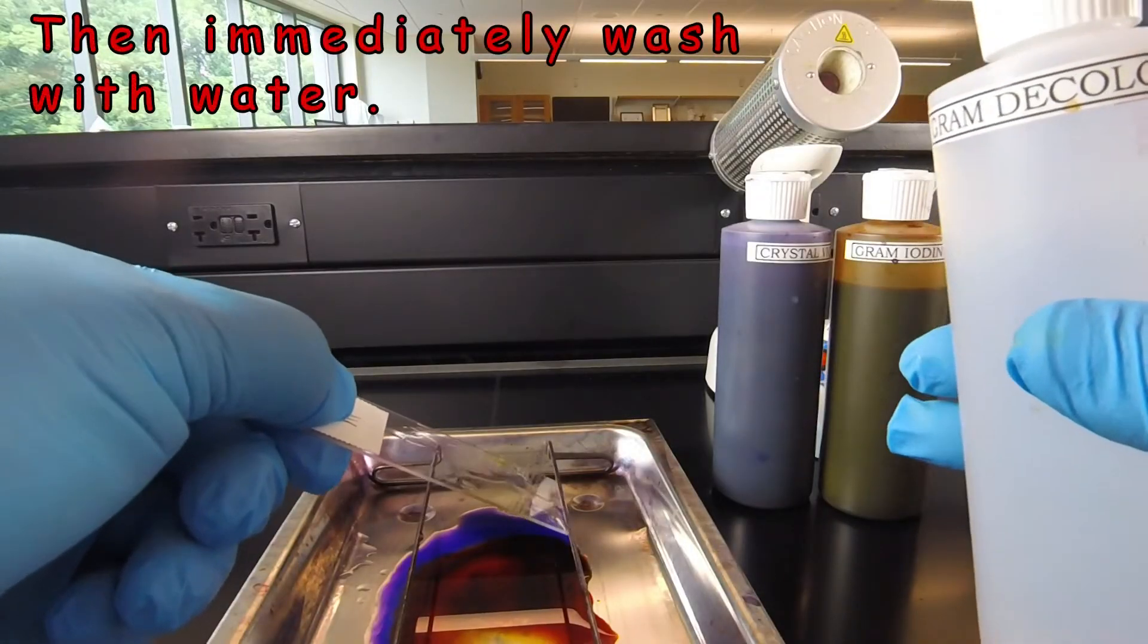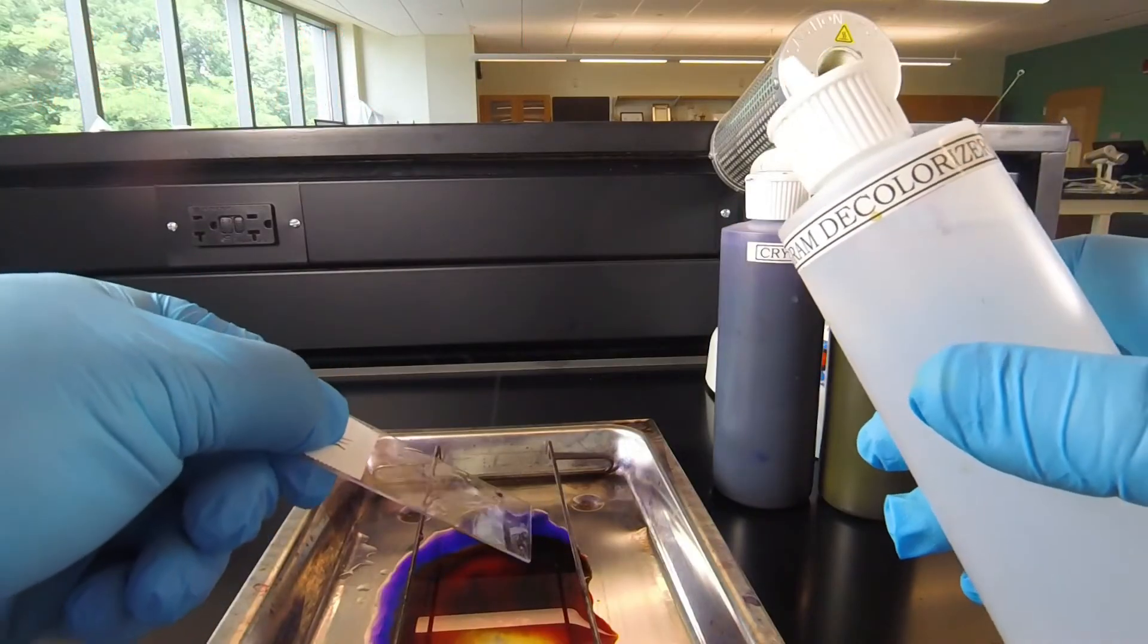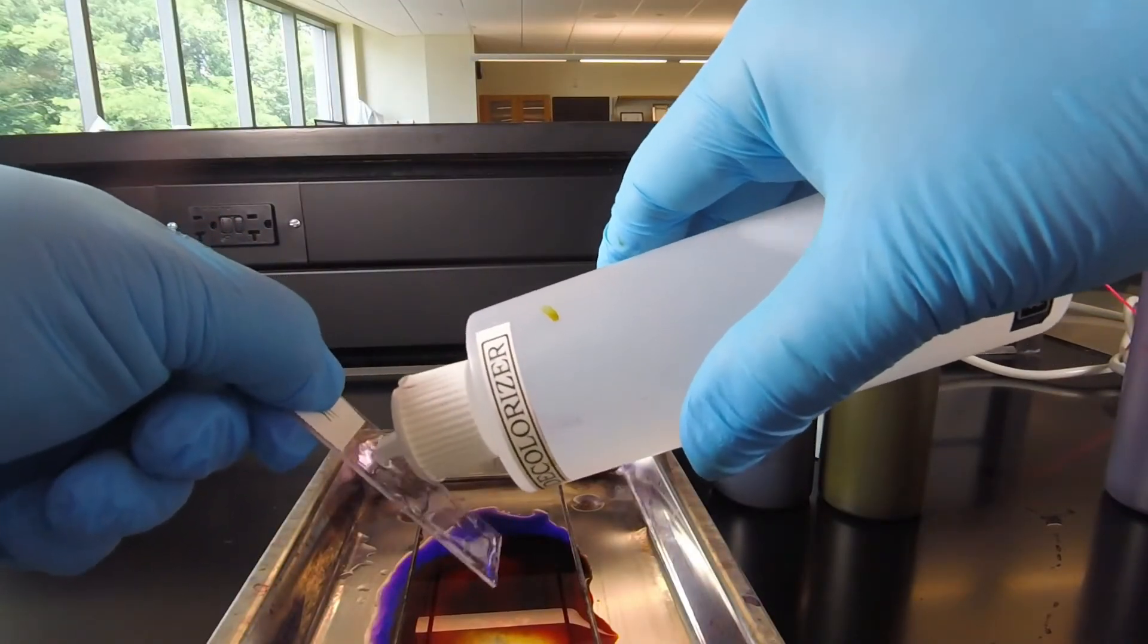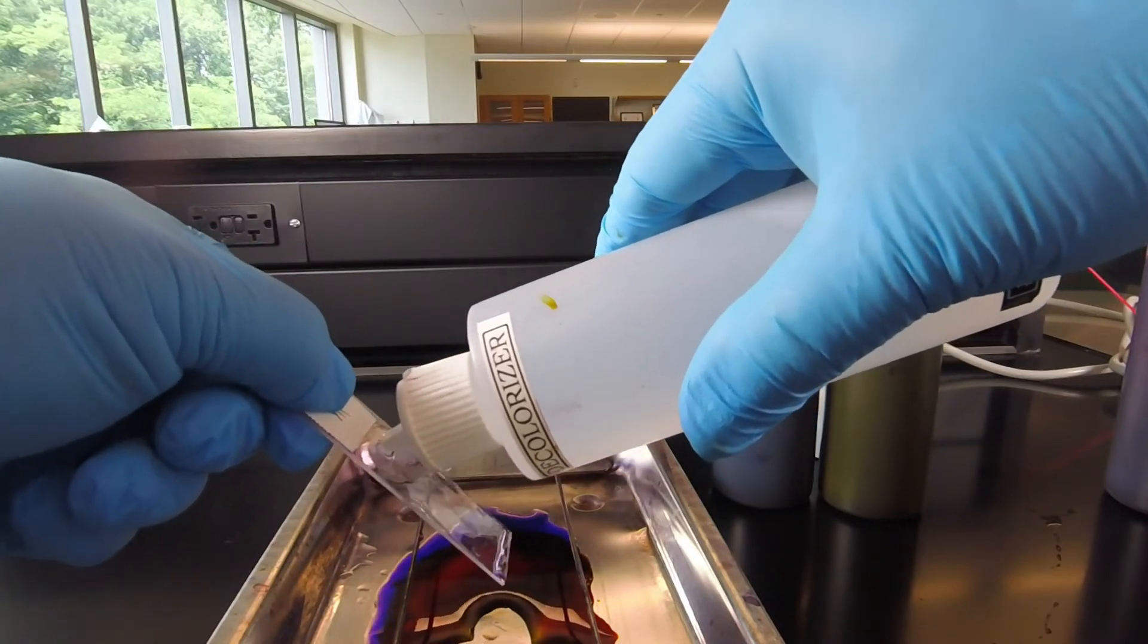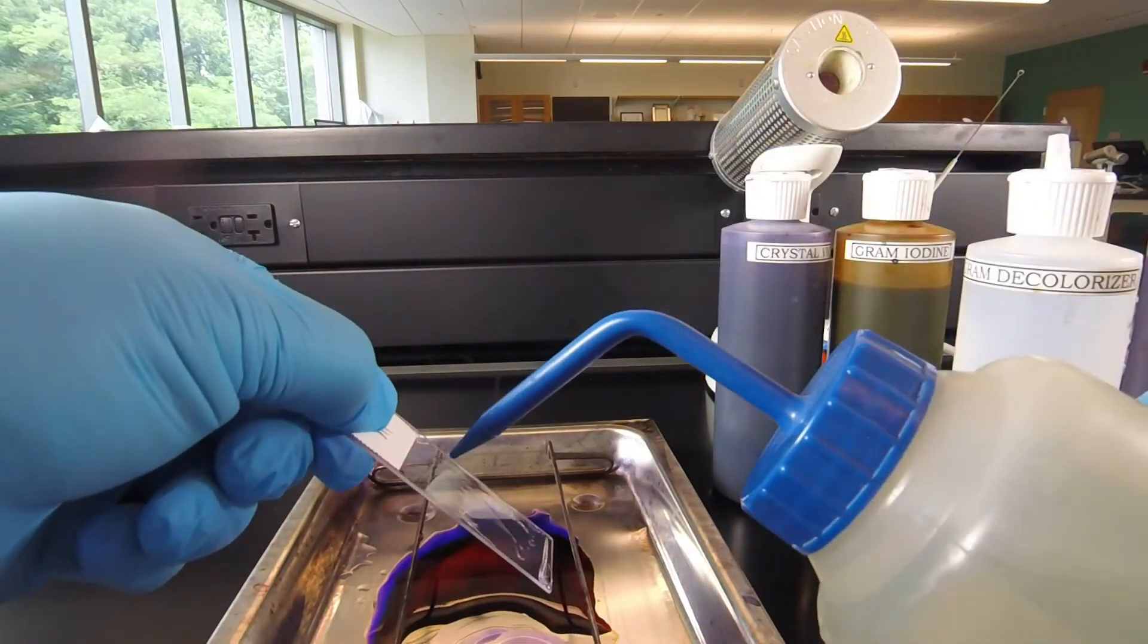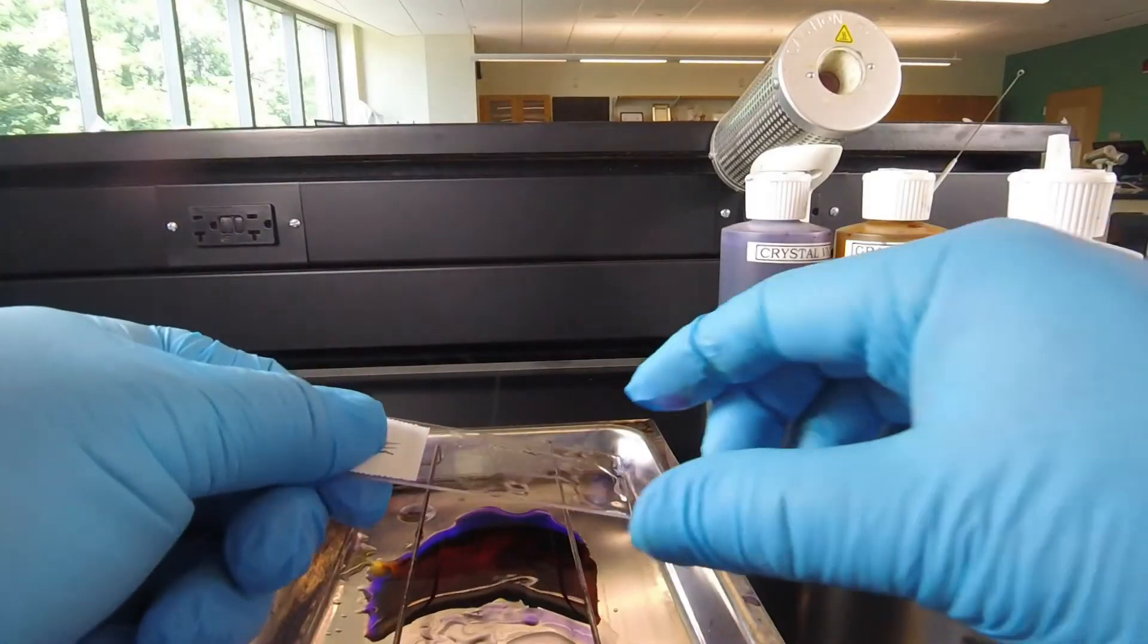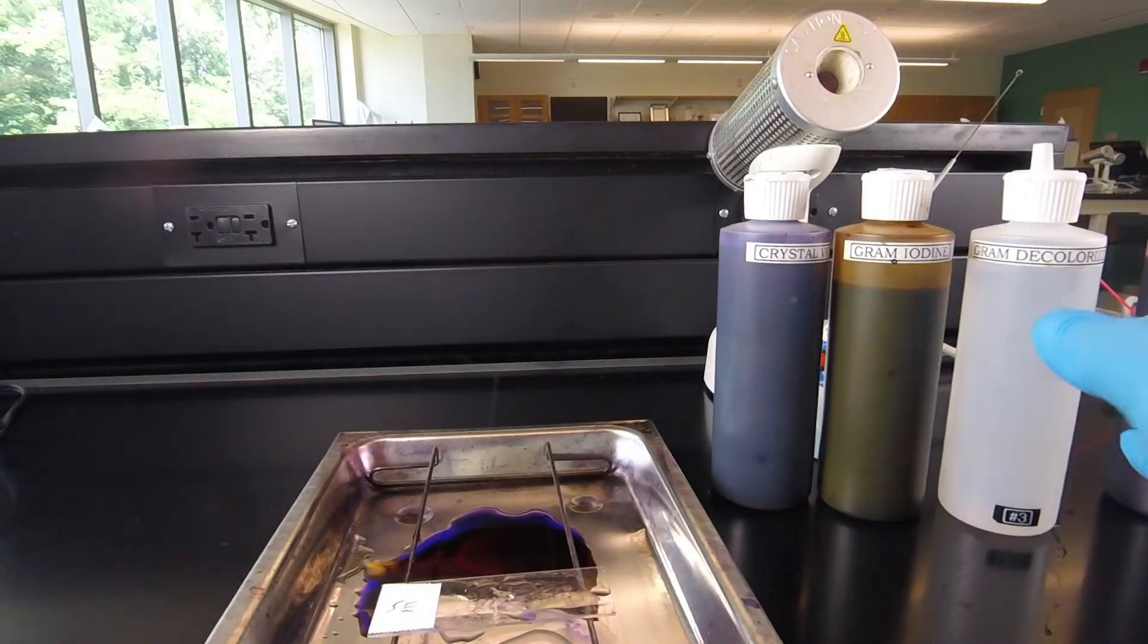As soon as the decolorizer coming off the bottom of the slide starts looking relatively clear, we immediately stop decolorizing and wash off the decolorizer with water. We're putting it back and forth. We see the purple coming off the bottom. Purple's still coming off. Now it looks clear. We take our wash bottle and wash off the decolorizer, shake off the excess water, put the slide back on the staining tray, and we're ready for our final step.